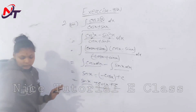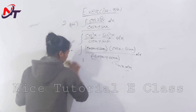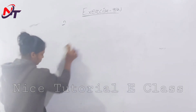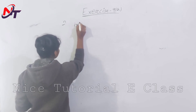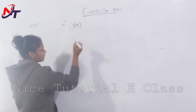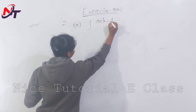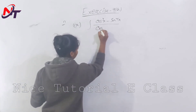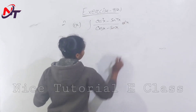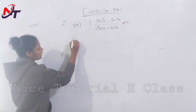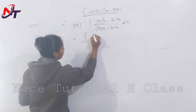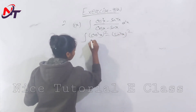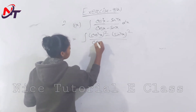So integration of cos 2x divided by (cos x plus sin x) dx equals sin x plus cos x plus c. Now look at the next question, question number ix.